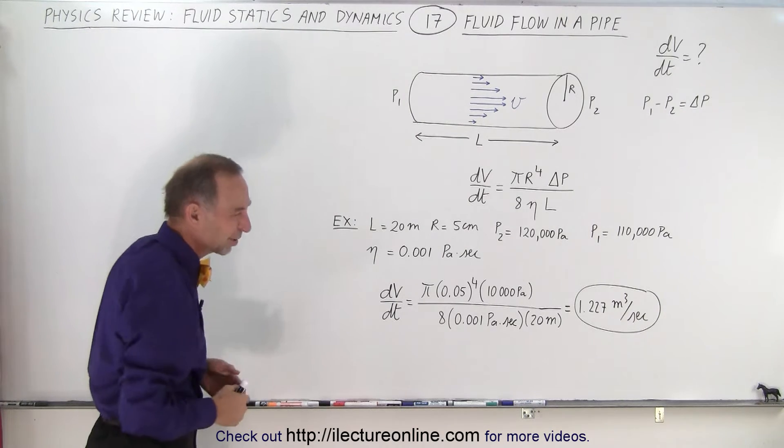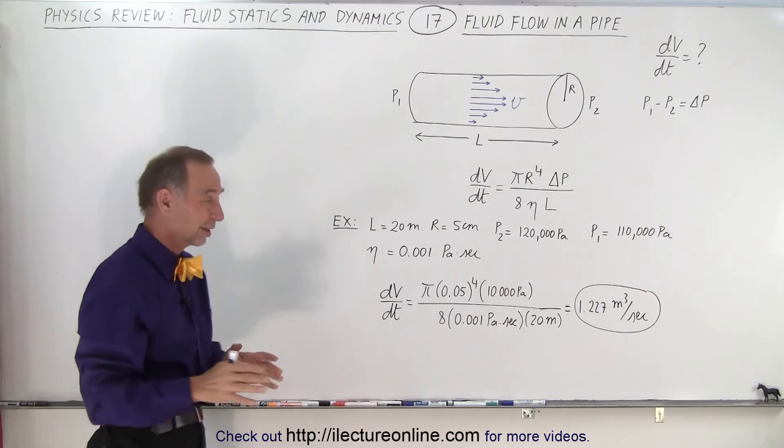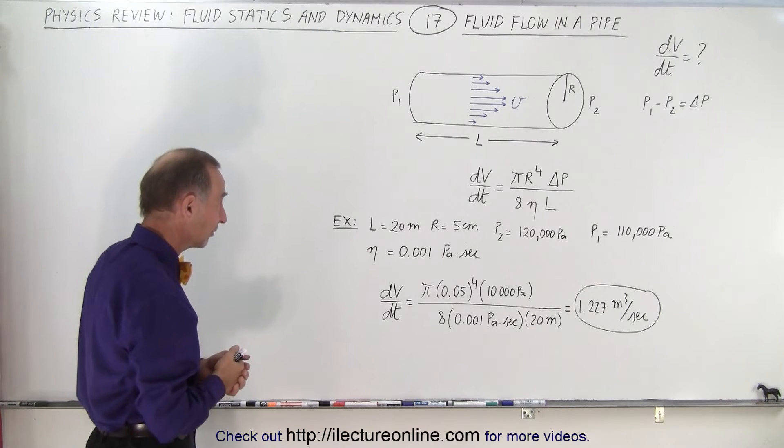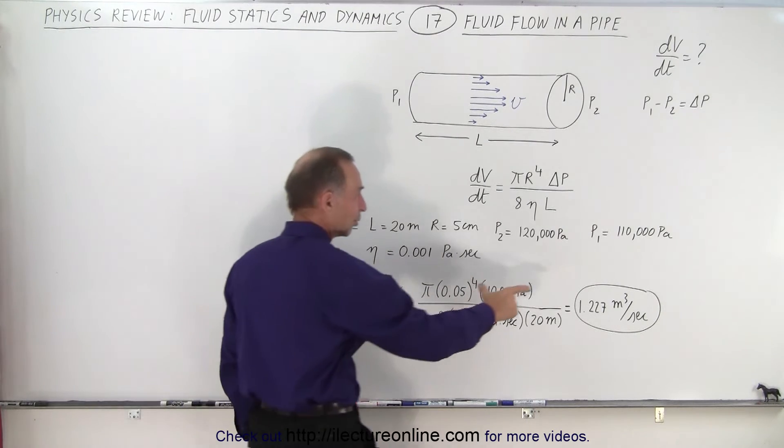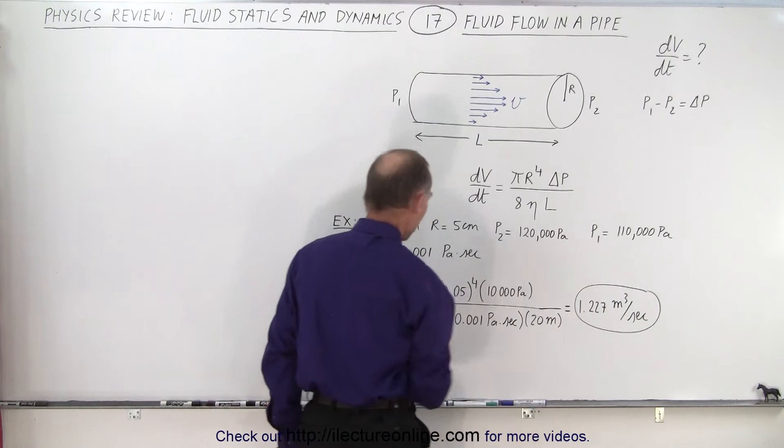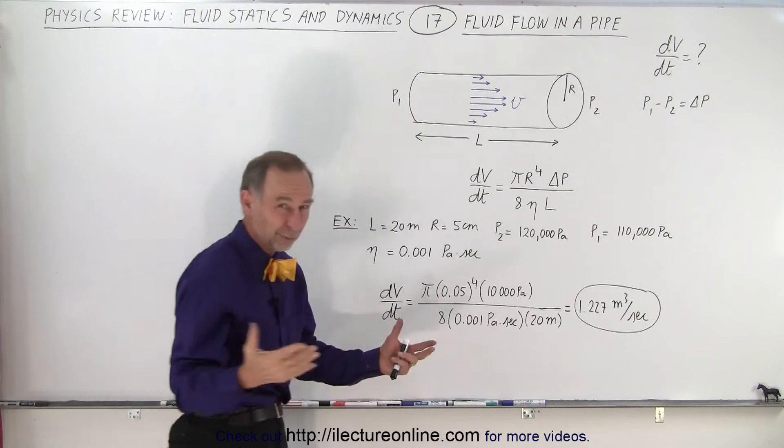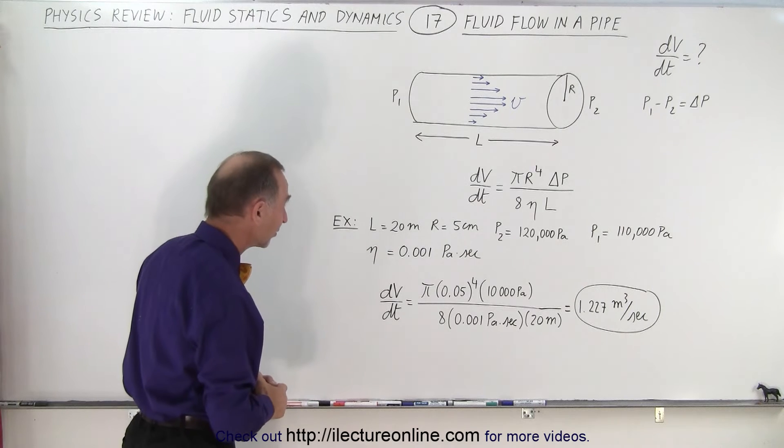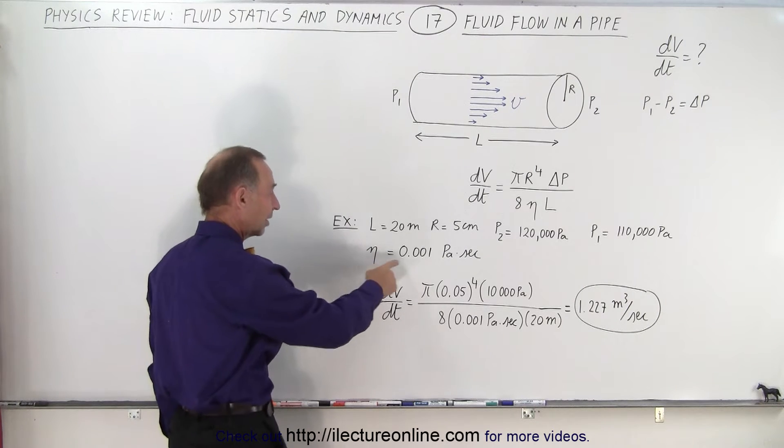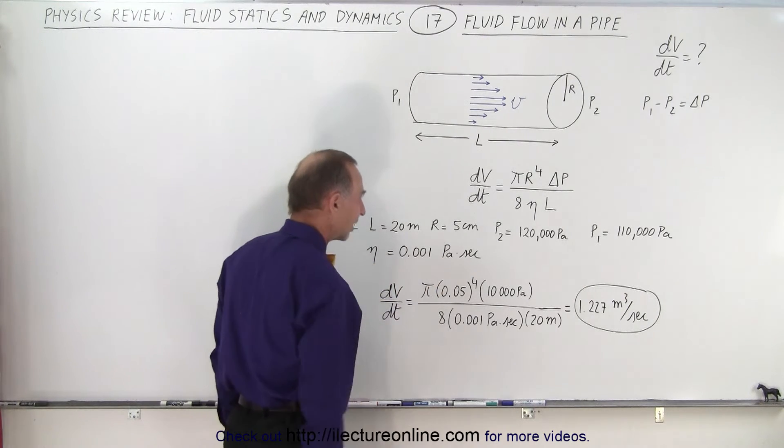Just as an example, let's throw in some numbers. This is not a really realistic idea, but it gives you the feel of how to do it. Notice that there's an enormous pressure difference over a pipe that is about 20 meters long, the radius of the pipe is 5 centimeters, which means the diameter is about 10 centimeters, and the viscosity of water, let's say 0.001 pascal time seconds.